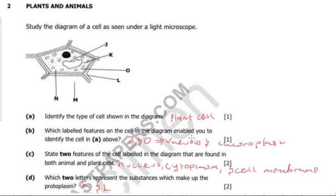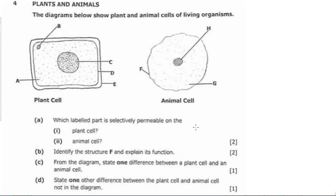Let's go to the last question on cells. Question number four — plants and animals. The diagram below shows plant and animal cells of living organisms. The plant cell on the left has parts A through E, and the animal cell on the right has parts F, G, H. On the plant cell: A is cytoplasm, B is the nucleus, C is vacuole, D is cell membrane, E is cell wall. On the animal cell: F is cell membrane, G is nucleus, and H is cytoplasm.